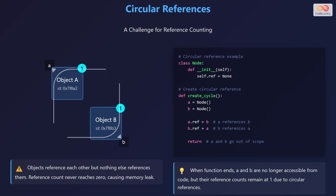For instance, in the code on the slide, objects A and B are created and each of them refers to each other. The count does not reach 0, causing a memory leak.